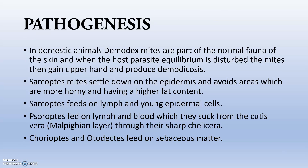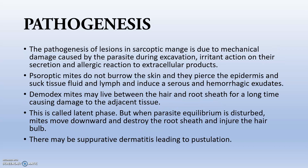Regarding pathogenesis: in domestic animals, the Demodex mites are part of the normal fauna of the skin and gain the upper hand whenever the equilibrium is lost, producing demodicosis. Sarcoptes mites settle on the epidermis and avoid areas that are more horny and have higher fat content. Chorioptes and Otodectes feed on sebaceous matter. Psoroptic mites do not burrow the skin; they pierce the epidermis and suck tissue fluid, inducing serous and hemorrhagic exudates. Demodex mites live between the hair and root sheath for a long time causing damage to adjacent tissue — that is why they are said to be in a latent phase.